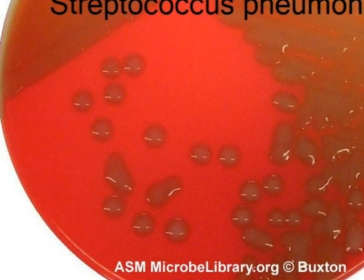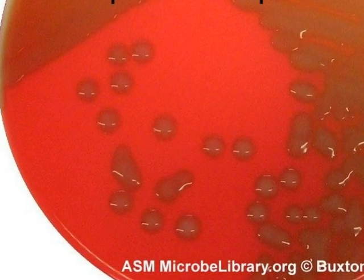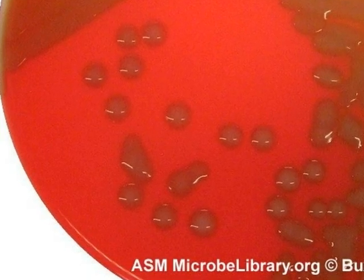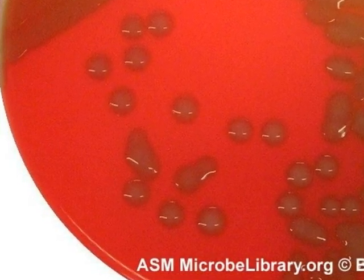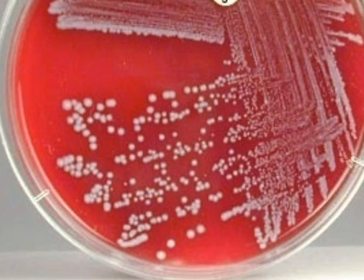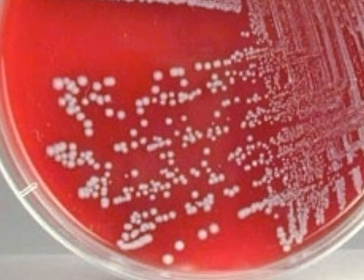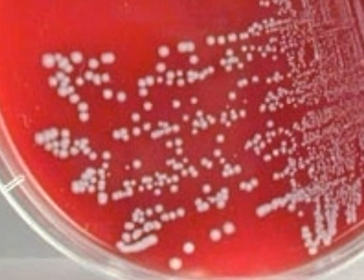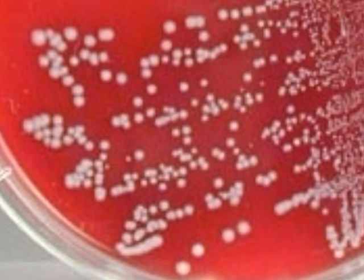One of its virulence factors is a capsule, so you should note that the colonies have a mucoid appearance. When no lysis occurs, no halo appears around the colonies. This is referred to as gamma hemolysis.